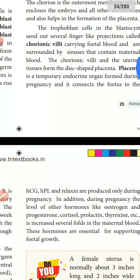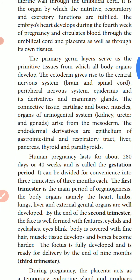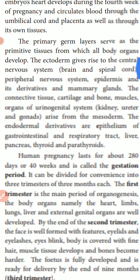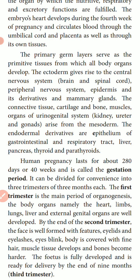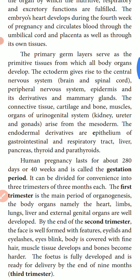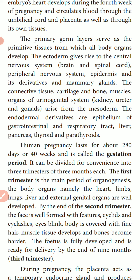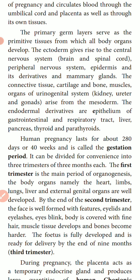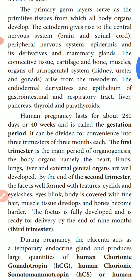The primary germ layers serve as the primitive tissues from which all body organs develop. These include ectoderm, endoderm, and mesoderm. The ectoderm gives rise to the central nervous system — that is, the brain and spinal cord — the peripheral nervous system, the epidermis and its derivatives, and the mammary glands.